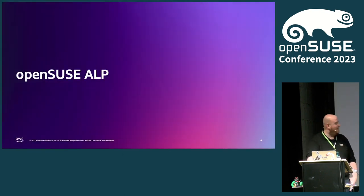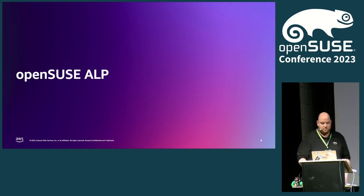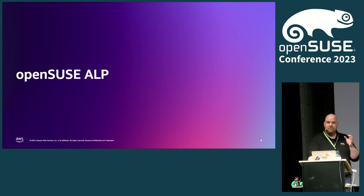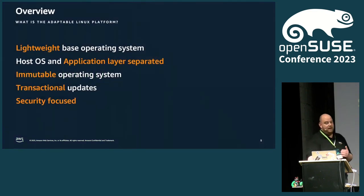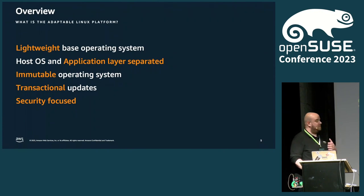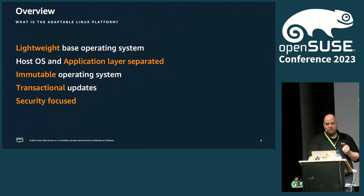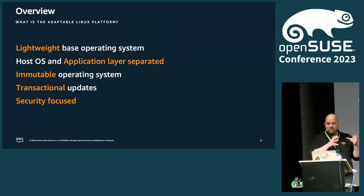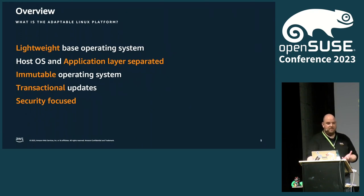We heard a lot about ALP already in the previous talk, so I will just focus on a small subset of things which I personally like most. ALP is a lightweight base operating system. The idea is you have your base system, you have your container workloads, you have a separation between the host and application layer, and it's an immutable operating system, which simplified means you can't just change something arbitrarily.